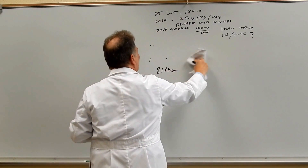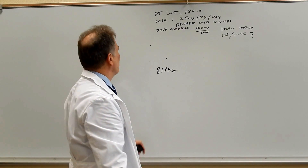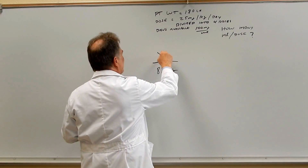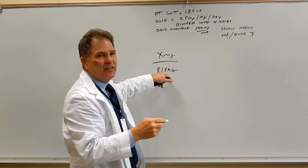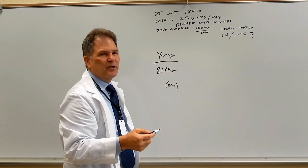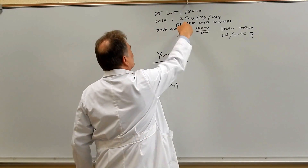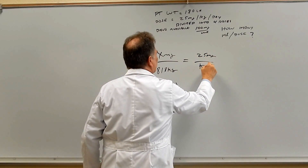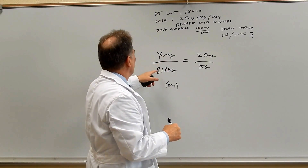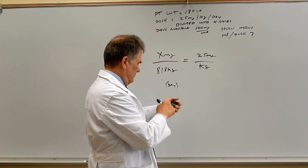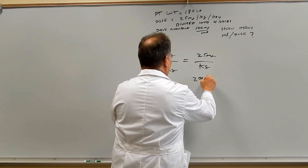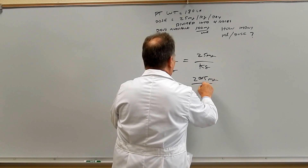That's step one. Now we figure out how many milligrams he's going to get per day, so we set up another problem: x milligrams per 81.8 kilograms per day, and the known ratio is 25 milligrams per kilogram per day. Solving for x gives us 81.8 times 25, which equals 2,045 milligrams per day.